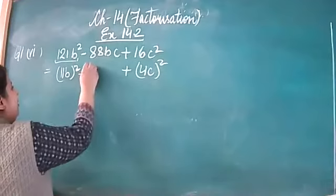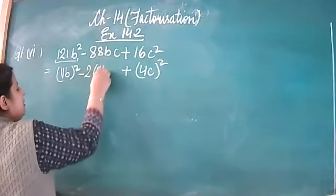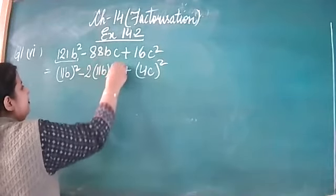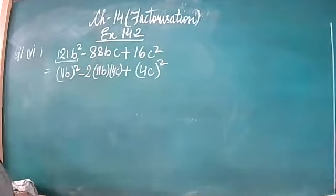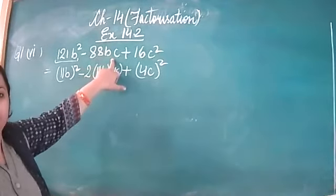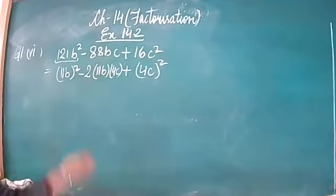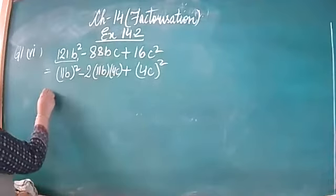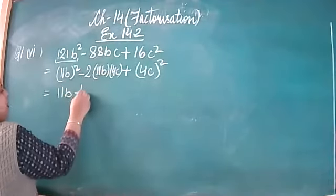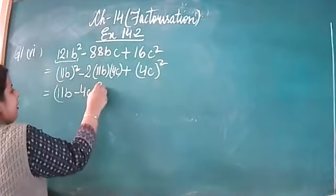The middle term can be written as 2 into the first term into the second term. When you multiply it, it comes out to be 88bc. So this is your identity — this is (11b minus 4c) whole square.